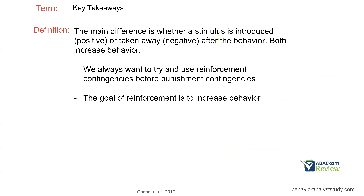The main difference is whether a stimulus is introduced — which is positive — or taken away — which is negative. But both increase behavior. Reinforcement will always increase behavior. We always want to try and use reinforcement contingencies before punishment contingencies. We base our treatment on reinforcement first, then use punishment if we have to. We use differential reinforcement all the time, which naturally involves extinction. Before we ever jump to punishment, we really want to try to use reinforcement — though there are situations where punishment is necessary as a first option.